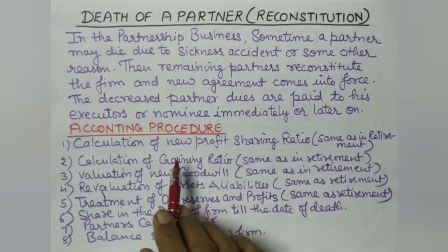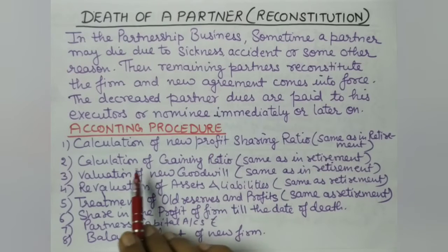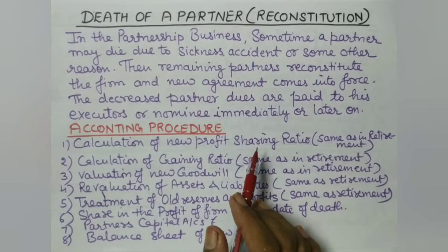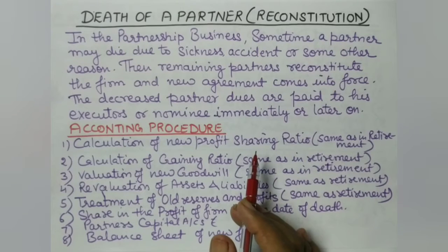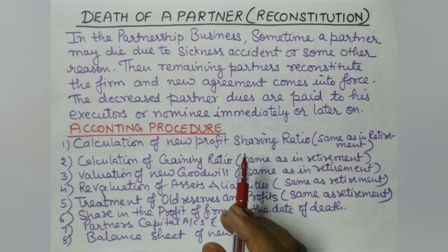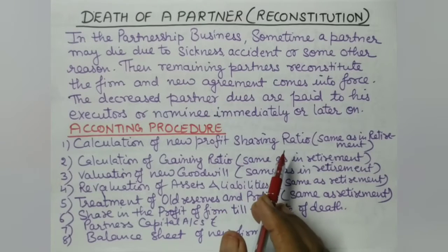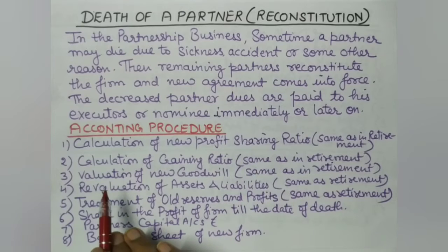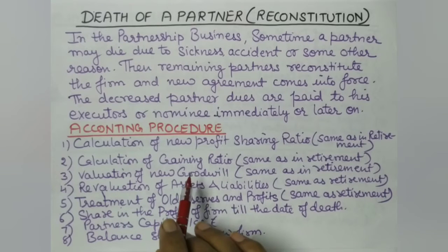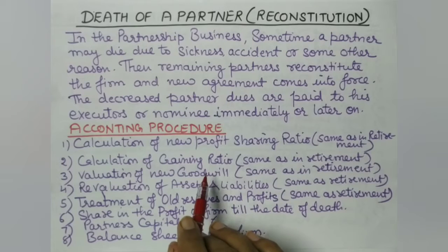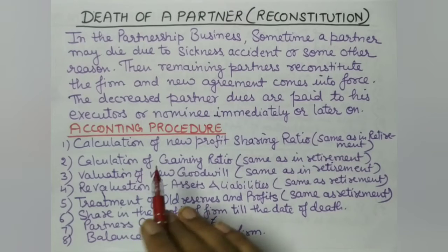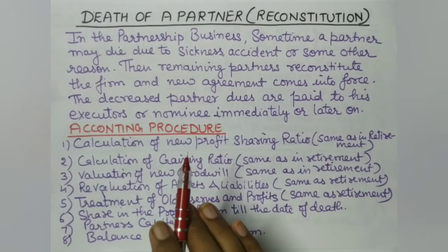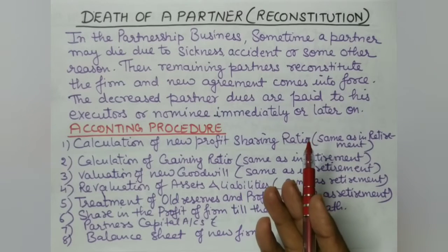The accounting procedure followed at the time of death of a partner is: First, we calculate the new profit sharing ratio — same as in retirement. The same method is followed to find what the new ratio will be for the remaining partners after the death of a partner. Second step is the calculation of the gaining ratio — the remaining partners gain the share.